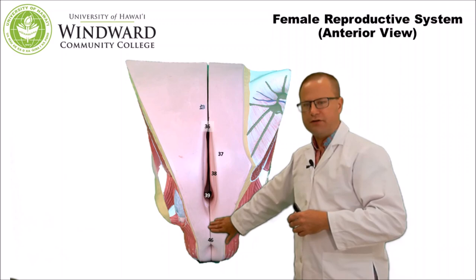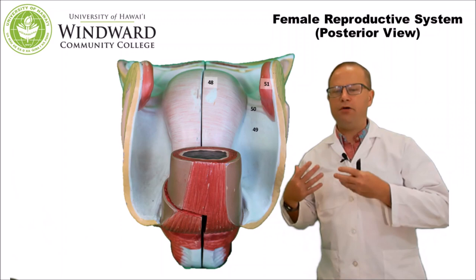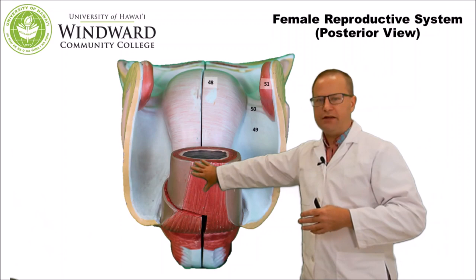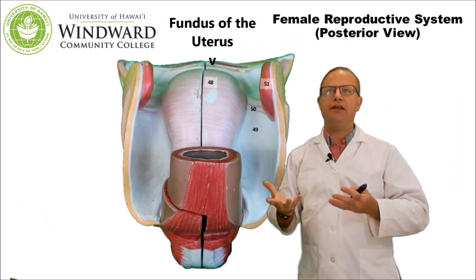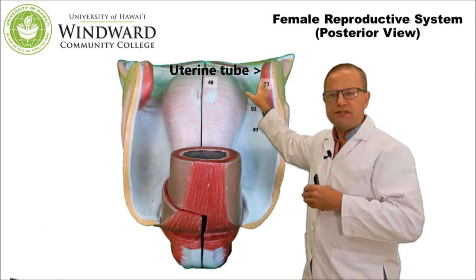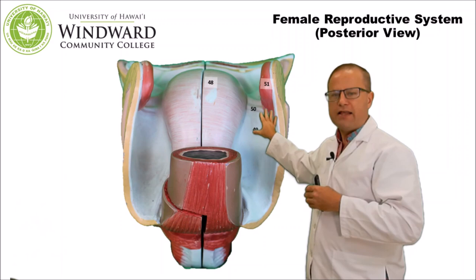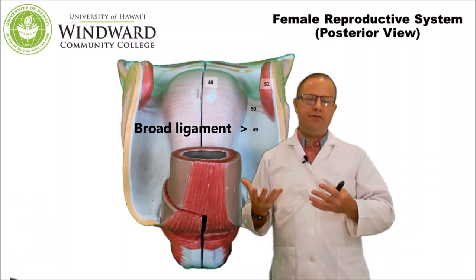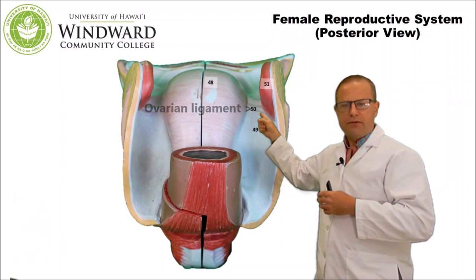Now a posterior view of the female reproductive tract. The rectum is here; up here is the fundus of the uterus — the rounded top of the organ, just as the stomach has a fundus. Also visible is the fallopian tube, which transports ovulated oocytes into the uterus. There is a broad, flat ligament called the broad ligament, which anchors the female reproductive tract in the abdominopelvic cavity. The ovarian ligament attaches the ovary to the uterus.